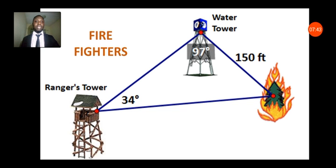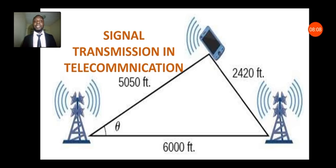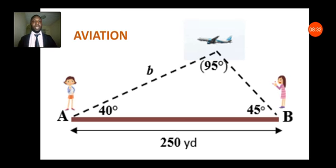We've just talked about the firefighters. The distance between the ranger's tower and the water tower might be known or might not be known. The distance of the fire to both points might and might not be known. You can also find the angles between them. So firefighters always use the sine and cosine rule. It is also used in signal transmission in telecommunications. The different distances between telecommunication masts and your normal cell phones sometimes vary, and the angle of inclination between them also varies.